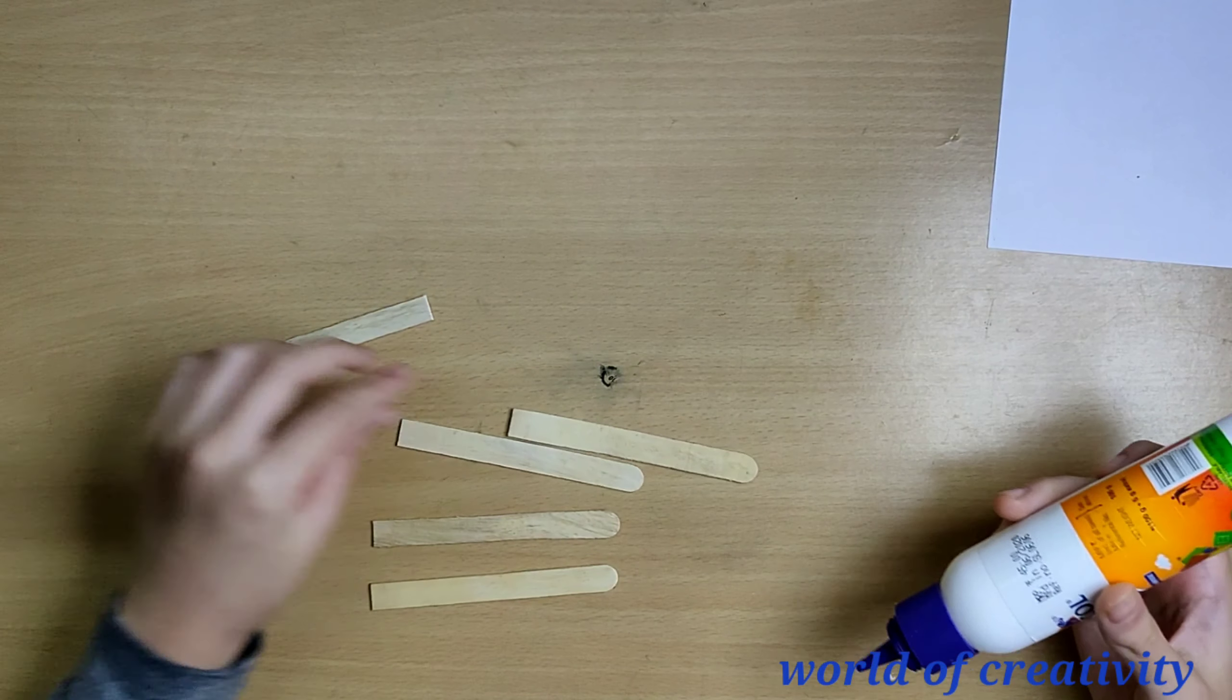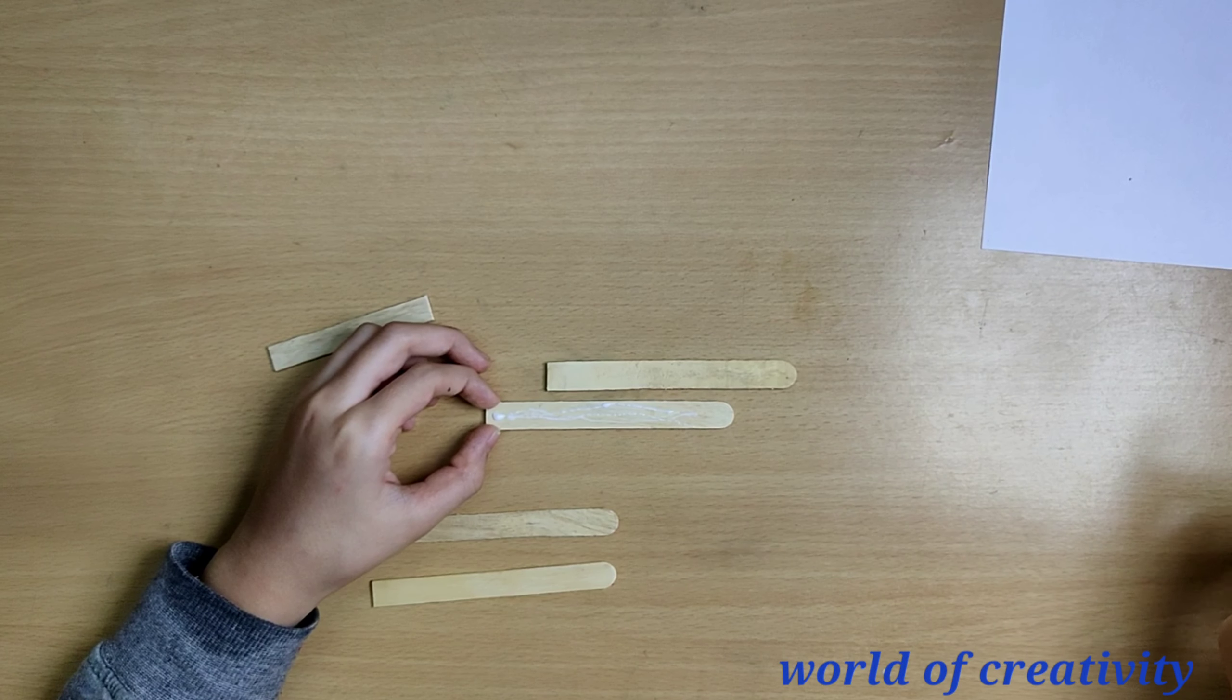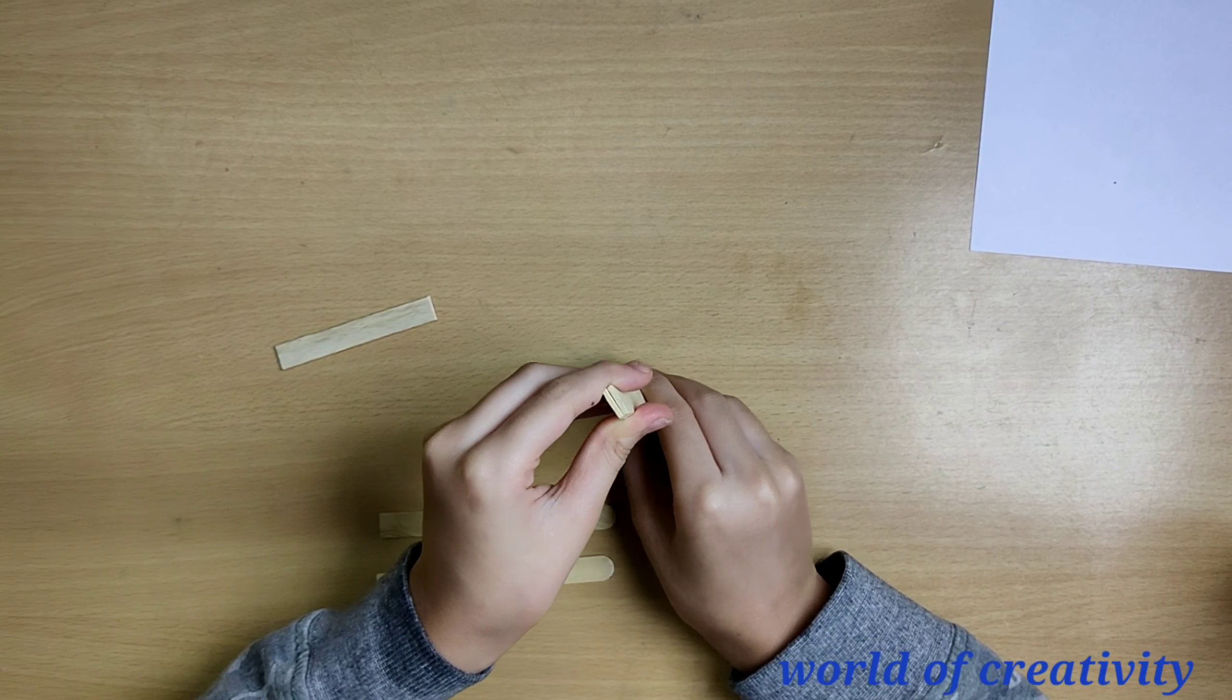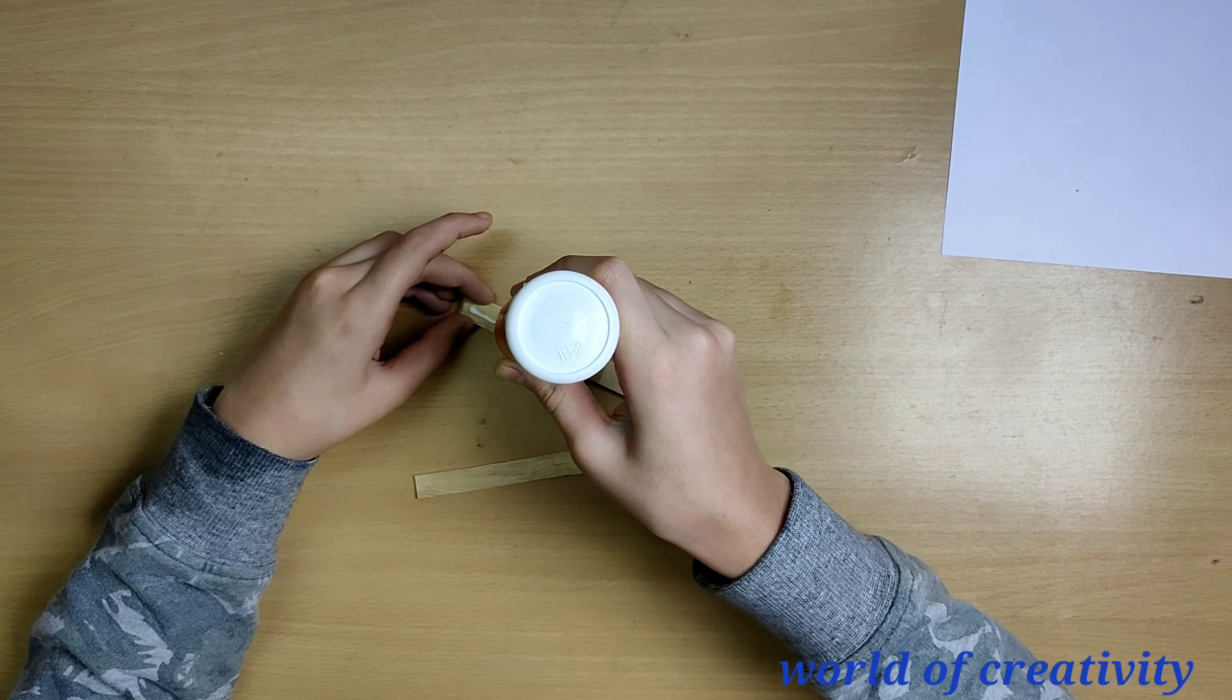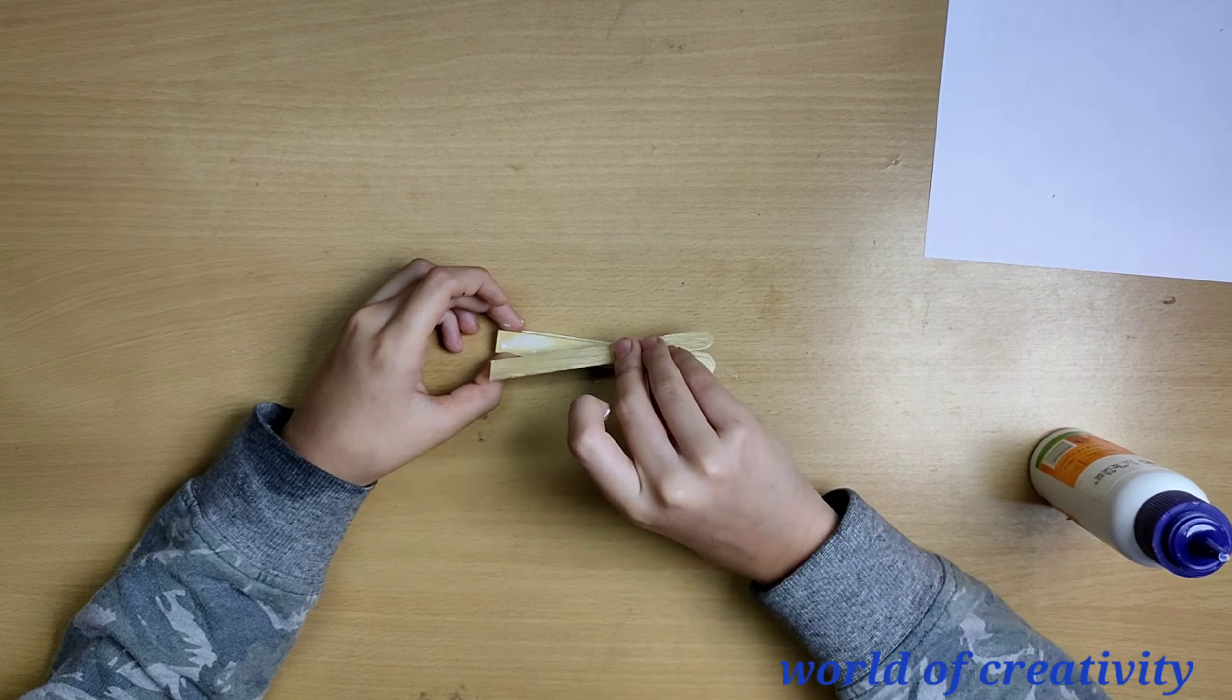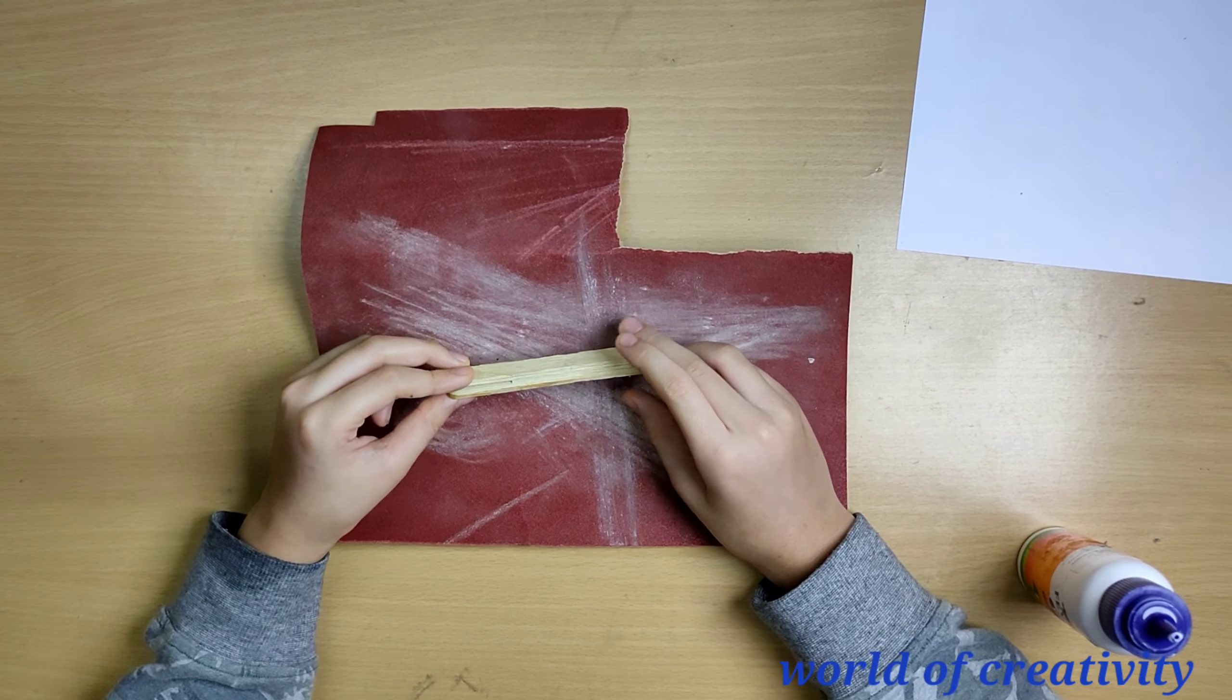Now we are going to make the middle part. We will glue it, and make sure the shorter one should be in the middle. So the middle part looks like this. Now we will sand it with some sandpaper.